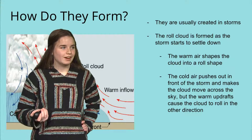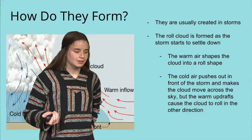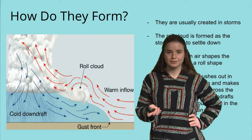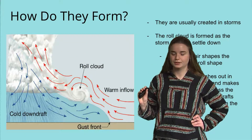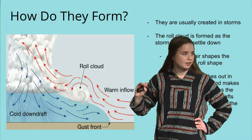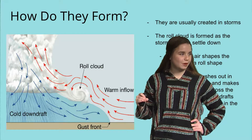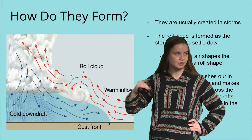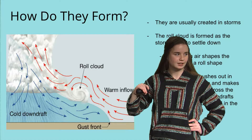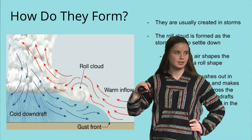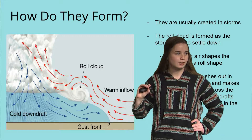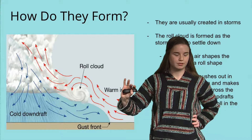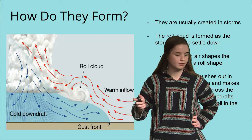So how do they form? They're usually created in storms and they'll form as the storm starts to dissipate. You can see the warm flow of air kind of creates the rolling effect in that direction, and then the colder air pushes it out away from the storm cloud.